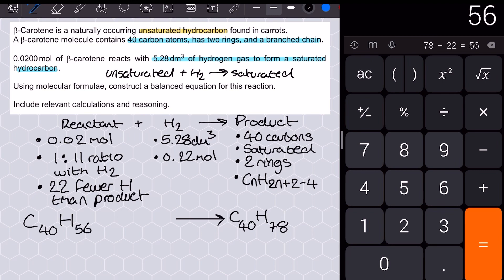Writing out the reaction equation from here is now a doddle, because I know my formula of the beta carotene, I know from the mole value that I've got 11H2, and I've already determined the structure of the product.